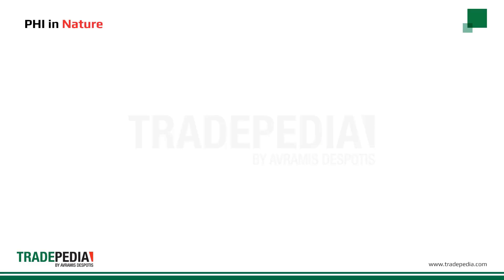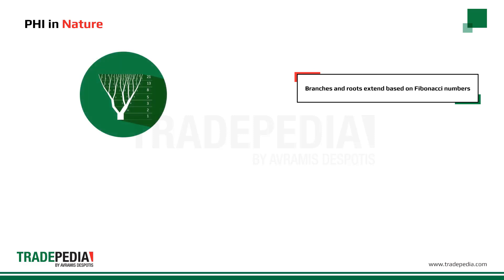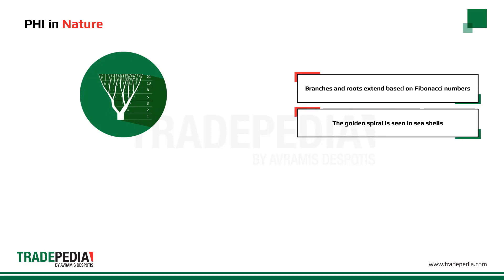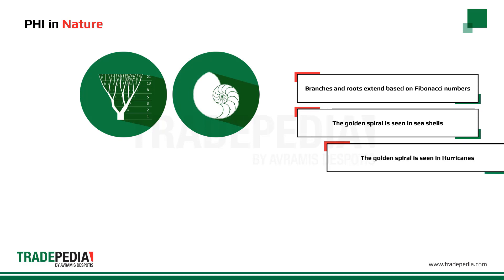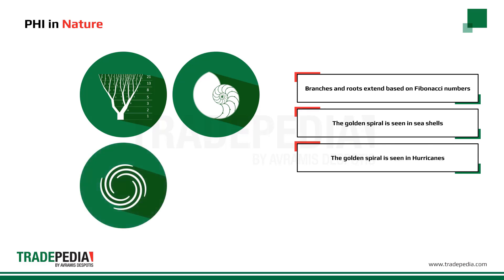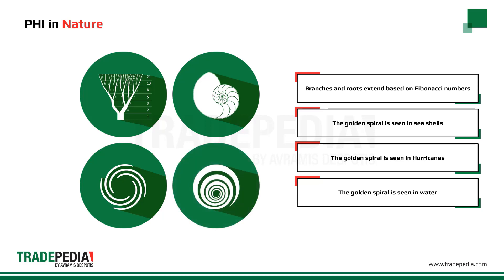Do you know where we find this golden spiral and rectangle? We find them everywhere in nature. The branches and roots of a tree extend based on the Fibonacci numbers and the number phi. The shape of a seashell takes the shape of a golden spiral. A photo of a hurricane from a satellite shows it takes the shape of a golden spiral — and it's not just any spiral, it's a golden spiral. The same applies if you fill your bathtub with water and let it flow down the drain — it flows in the shape of a golden spiral.